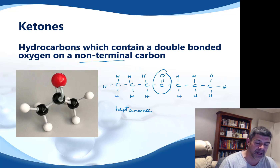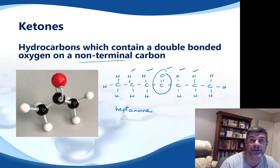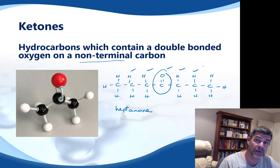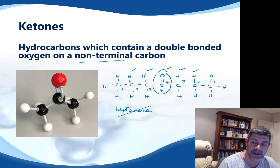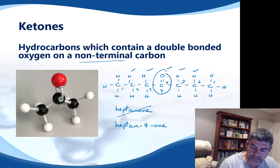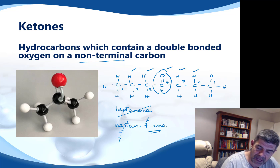Unlike with the aldehyde where the double-bonded oxygen can only be on an end carbon, with ketones we have several options for where the double-bonded oxygen could sit — this is where ambiguity arises. If there is more than one place where the double-bonded oxygen could go, we need a number to clarify. Counting from this end: 1, 2, 3, 4 — and counting from the other end: 1, 2, 3, 4 — still position 4. So the correct name is heptan-4-one, with the 4 locating the double-bonded oxygen at carbon number 4 and hept indicating seven carbons.